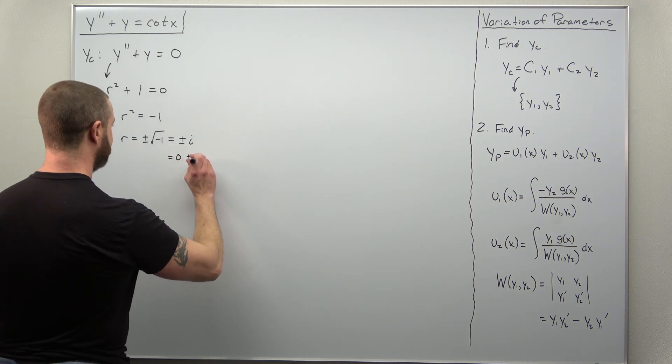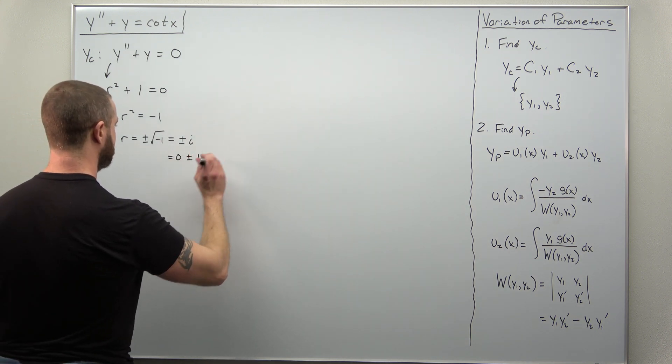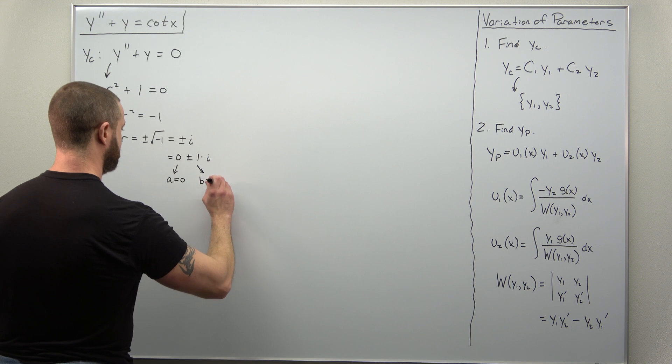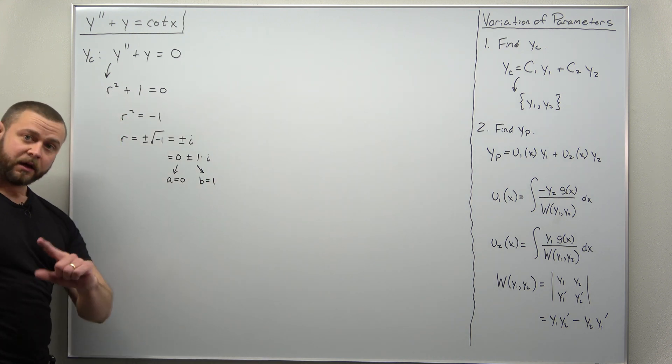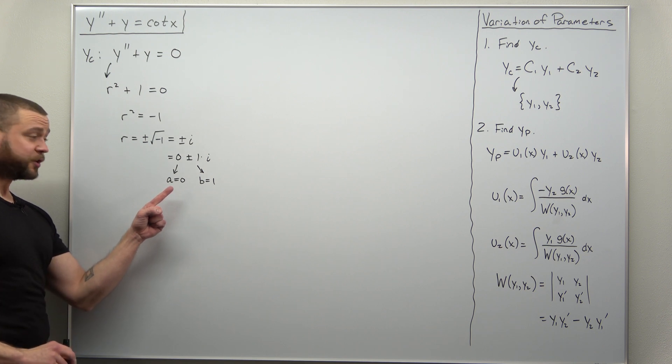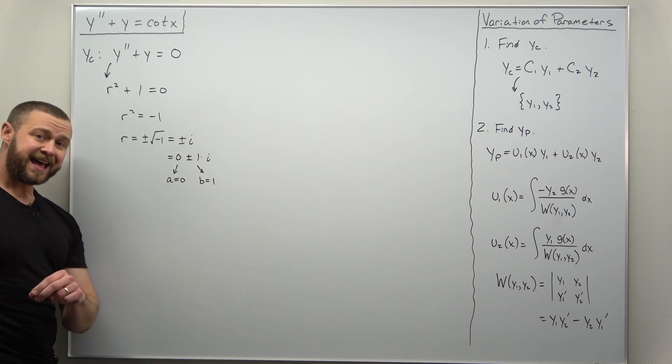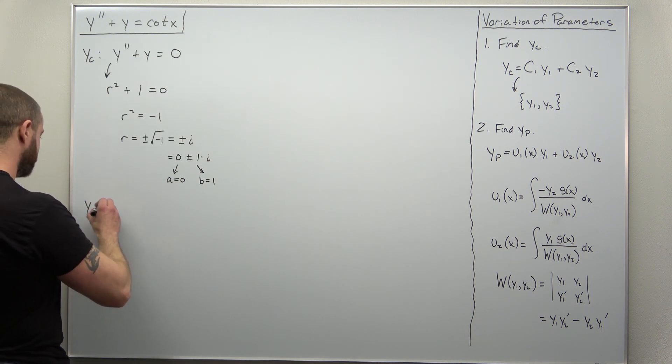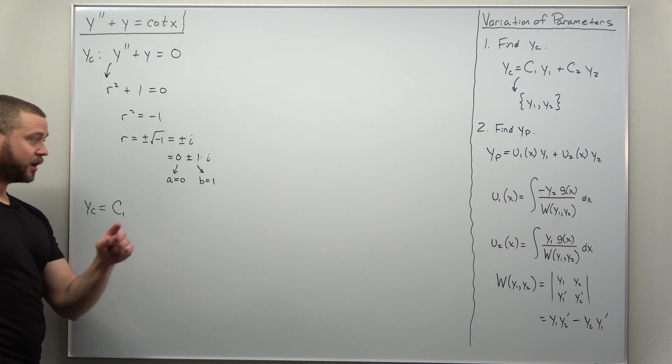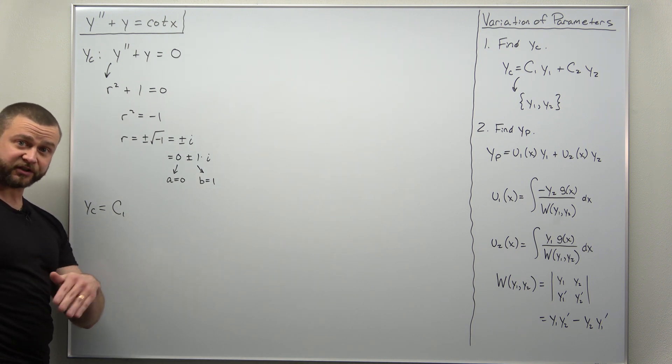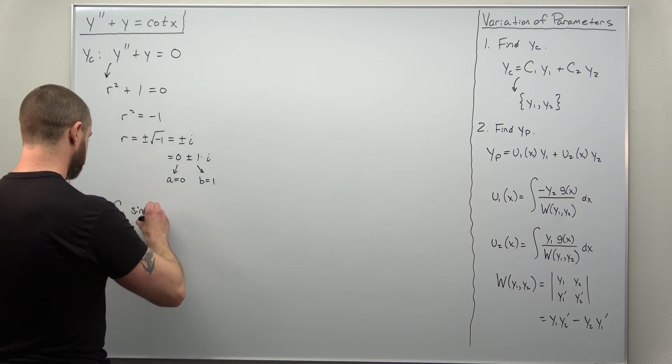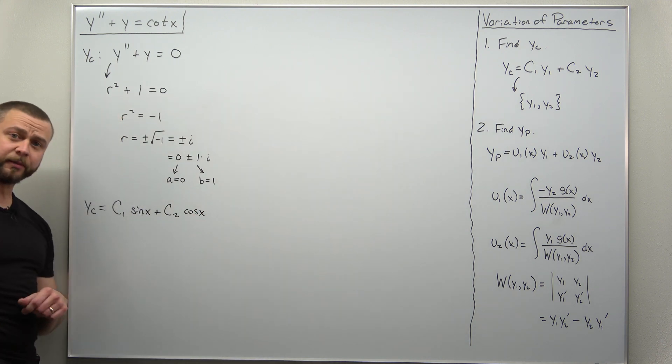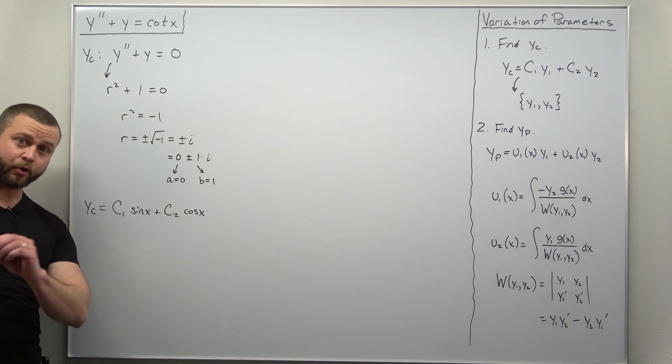You can write this in the form of a complex number. So we have our real part as zero and our imaginary part as one. In this case, when the real part is zero, e to the ax, e to the zero is just one. So you get as your complementary solution here a linear combination of sine of bx, sine of 1x, or just sine of x. And then you have your similar cosine term. All right, that should go very quick.